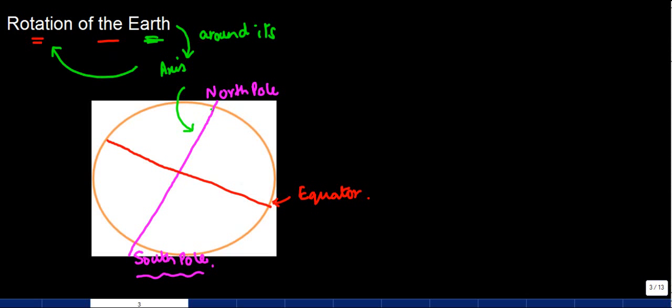The Earth moves around its own axis. This axis makes an angle of 66.5 degrees with the orbital plane. And what is the orbital plane? It's a plane formed by the orbit. So this axis makes an angle of 66.5 degrees with the orbital plane.